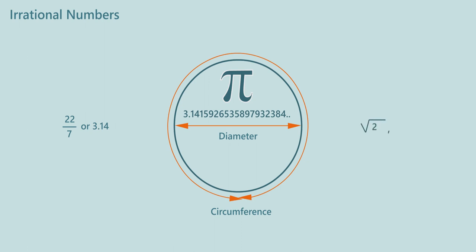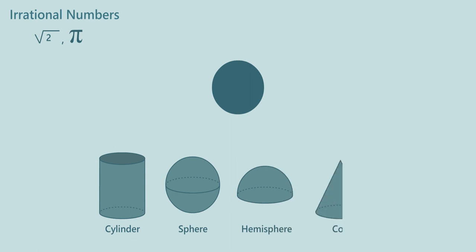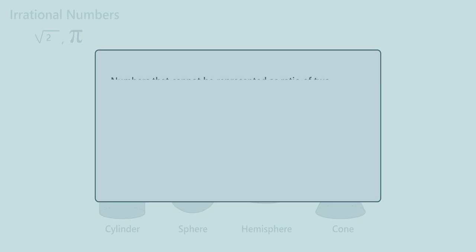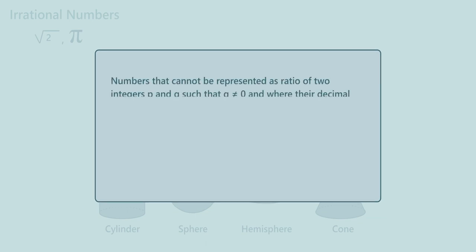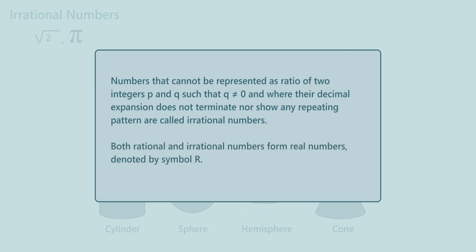So numbers like square root of 2 or pi are irrational numbers which have many applications in the real world. The area or volume of shapes that involve a circle — such as cylinder, sphere, hemisphere, cone — are basically irrational numbers as they involve the irrational number pi, so we calculate these by approximating pi as 22/7 or 3.14. Numbers that cannot be represented as a ratio of two integers p and q such that q is not equal to 0, and where their decimal expansion does not terminate nor show any repeating pattern, are called irrational numbers. Both rational and irrational numbers together form real numbers, denoted by the symbol R.